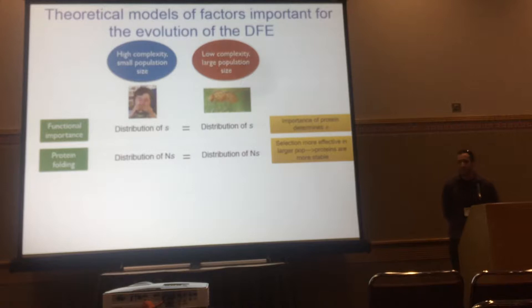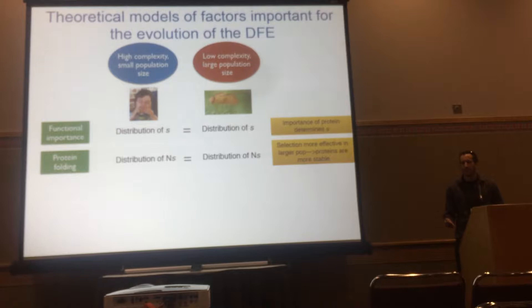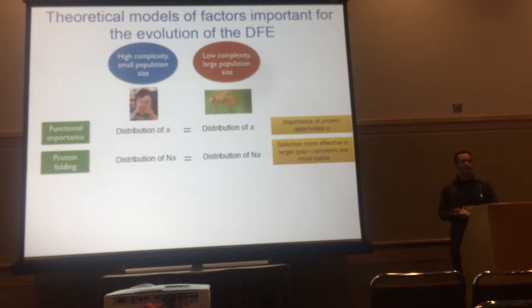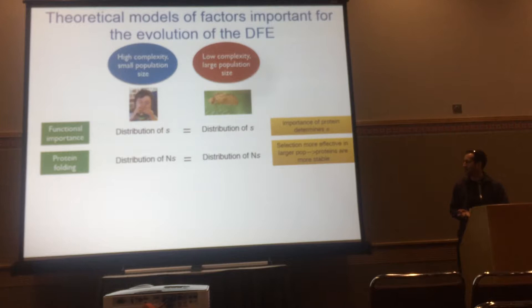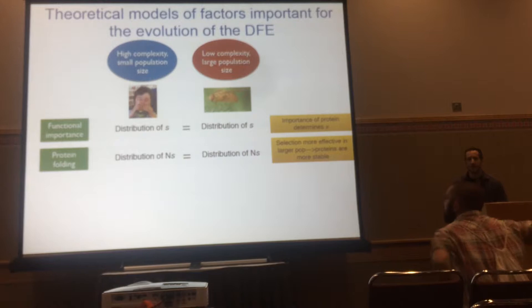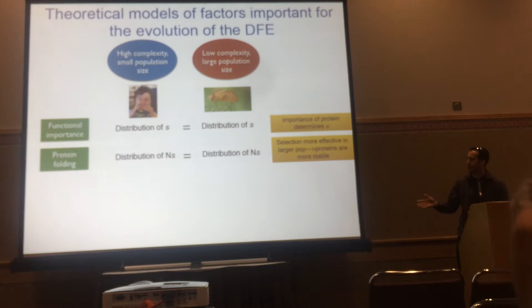A second model, the protein folding model, suggests that it's not the proteins themselves that are most important for fitness, but rather having stable proteins — that's where selection is really acting, because you want thermodynamically stable proteins. This model essentially involves epistasis: in a large population, N is large, selection is very efficient, and stable proteins can be made. When subsequent deleterious mutations occur on these stable proteins, they're less likely to have a big impact — so N would be large and S would be small.